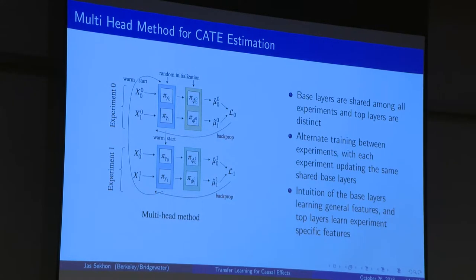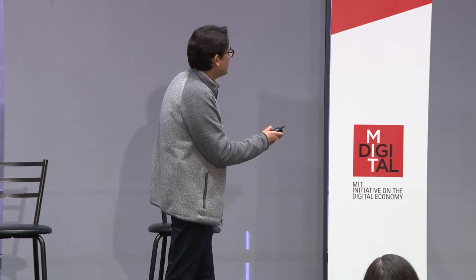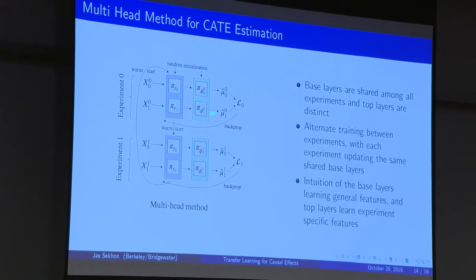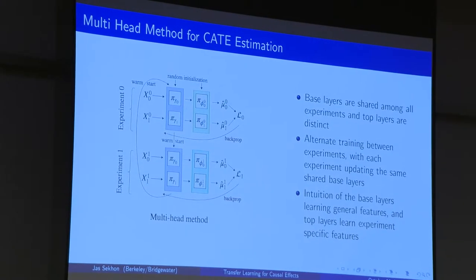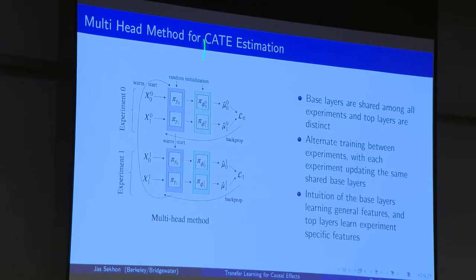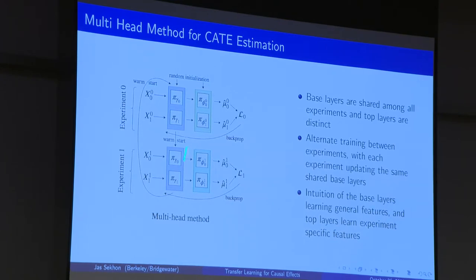Something that works better in general is called multi-head — the same idea but you don't freeze one layer based on the first experiment. You have two layers and get a batch of data, back-prop the whole thing making updates to both layer one and layer two. Then a second batch from experiment two comes, and you back-prop the whole thing updating both layers. Then back to experiment one — it gets to update both. So the first layer is shared in some sense and jointly optimized. If you don't have a strong prior on which experiment is most valid for establishing common features, this is probably the way to go.